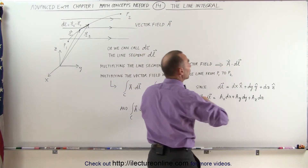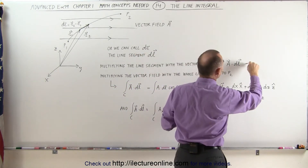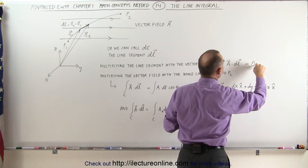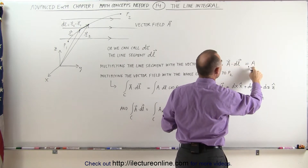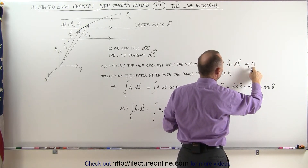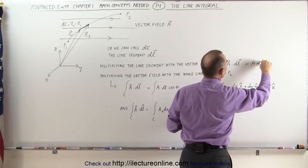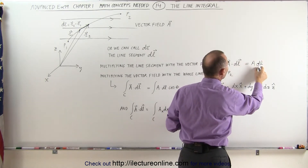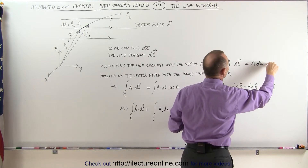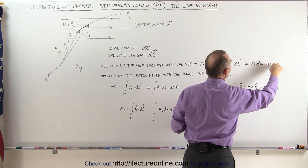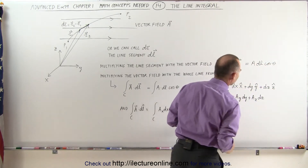Of course we know that A dot dl is equal to the magnitude of the vector field at that point, times the magnitude of that small line segment, times the cosine of the angle between the two.